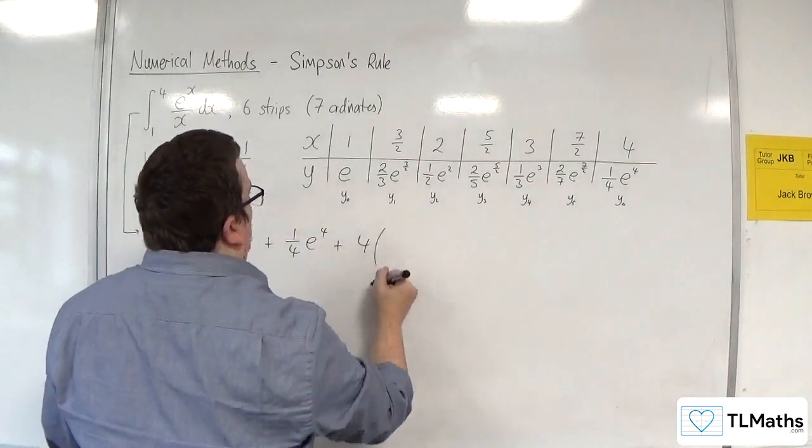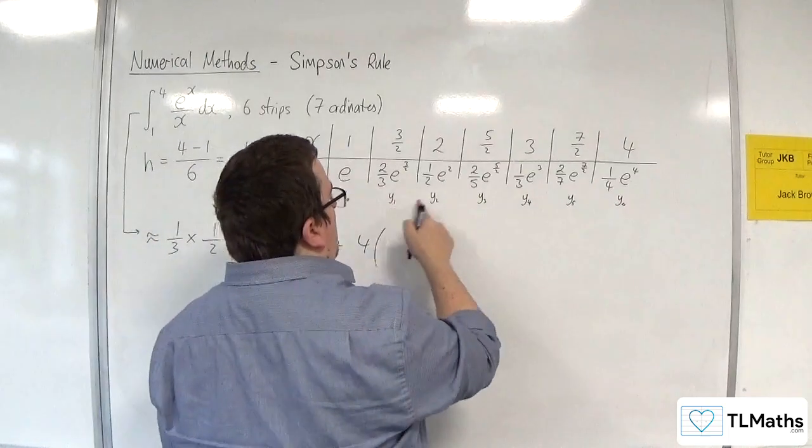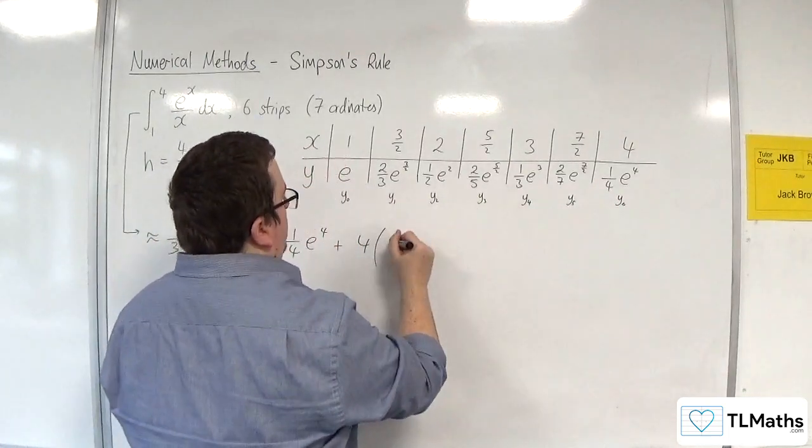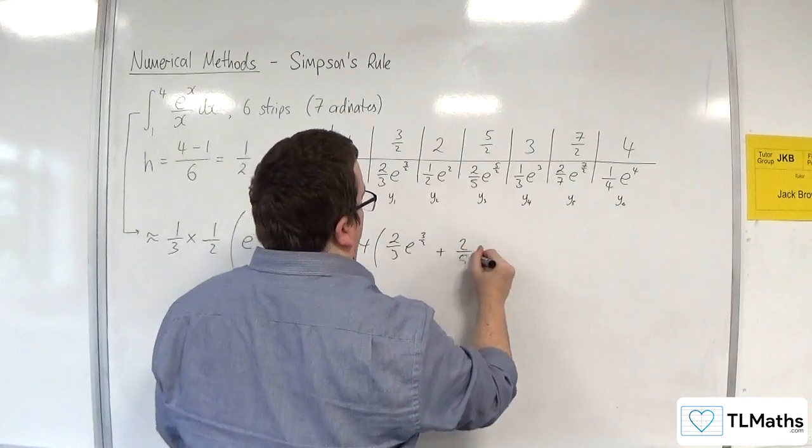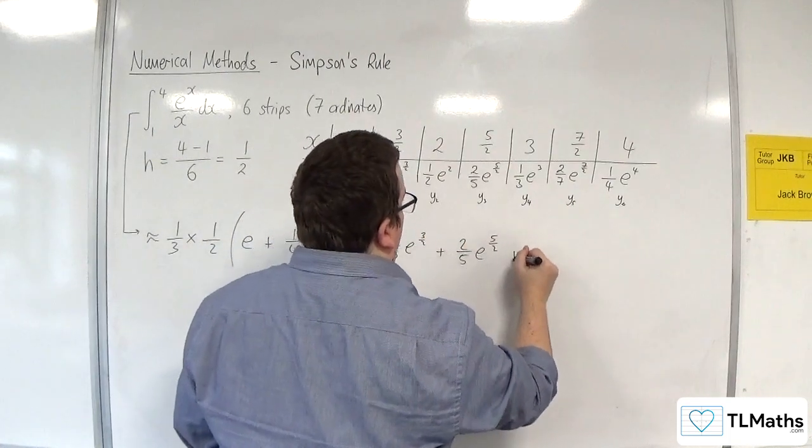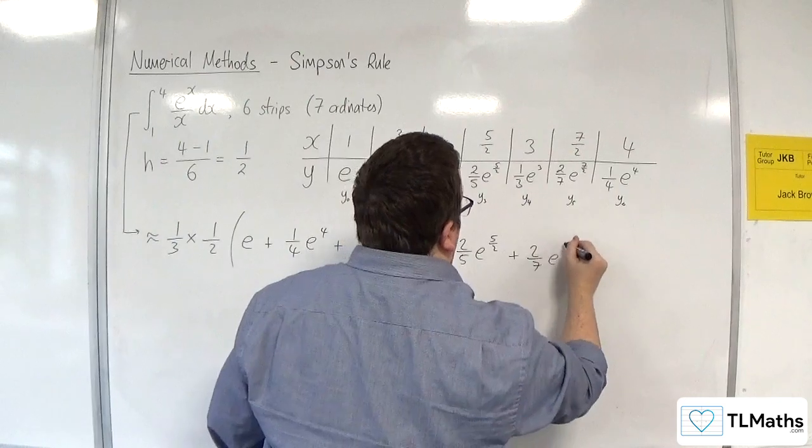Then you've got 4 lots of the odd ones, so y1, y3, y5. So 2 thirds e to the 3 halves, 2 fifths e to the 5 halves, and 2 sevenths e to the 7 halves.